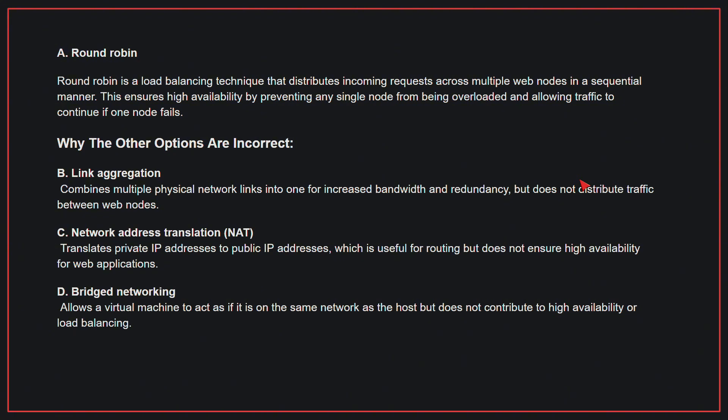Why the other options are incorrect? B, link aggregation: this combines multiple physical network links into one for increased bandwidth and redundancy, but does not distribute traffic between web nodes. C, network address translation: this translates private IP addresses to public IP addresses, which is useful for routing but does not ensure high availability for web applications.